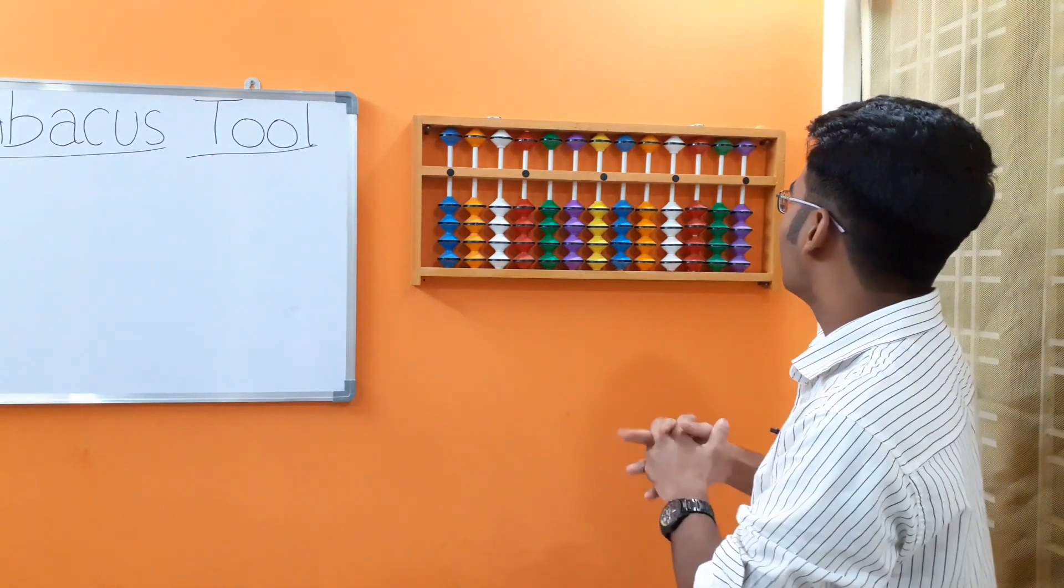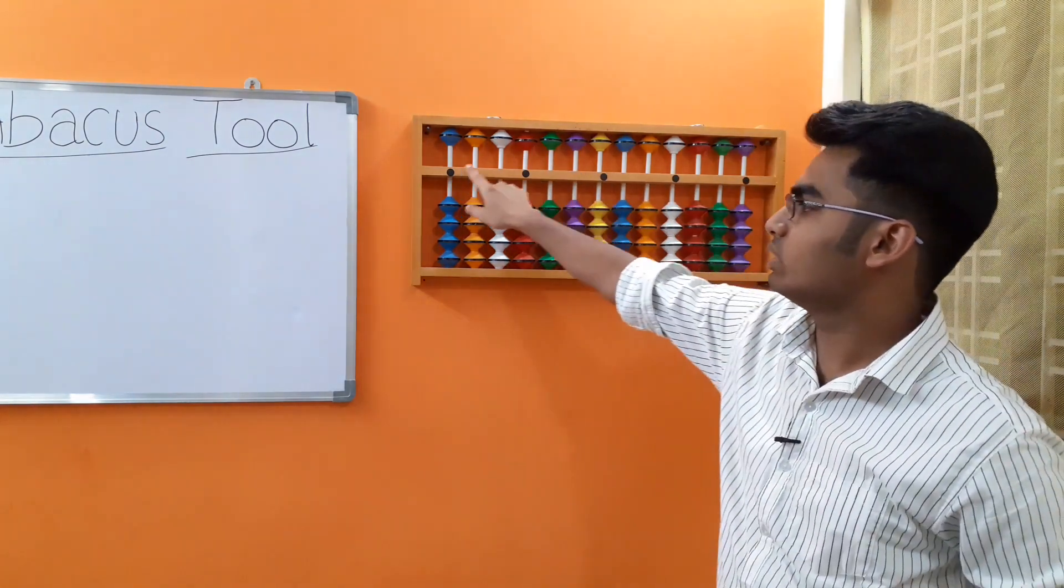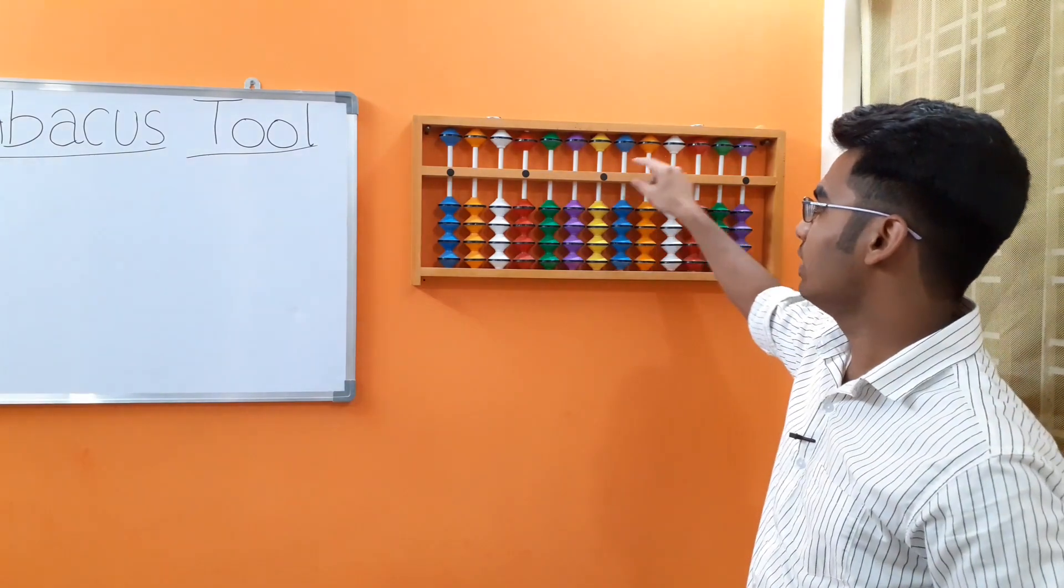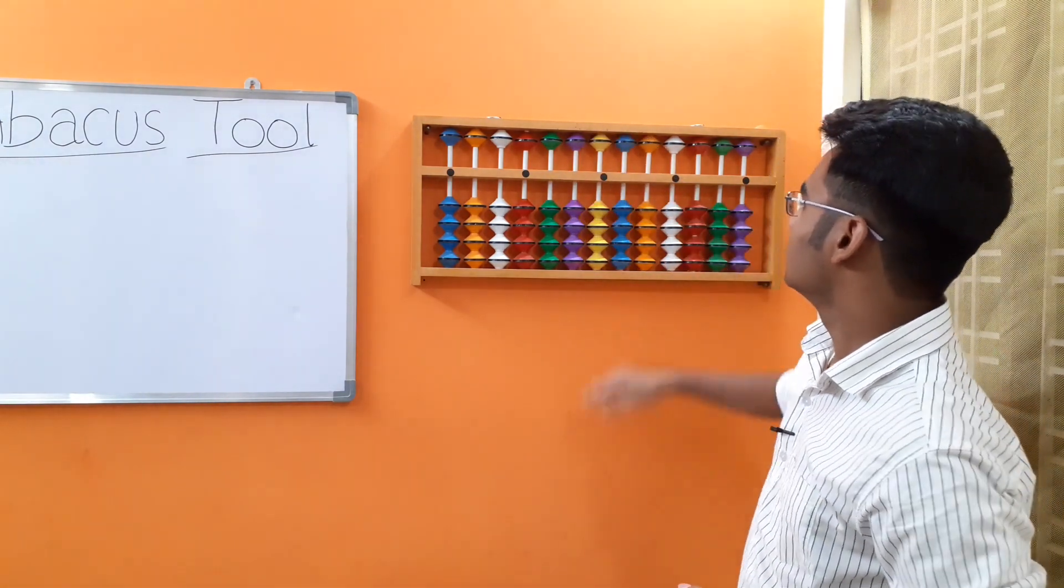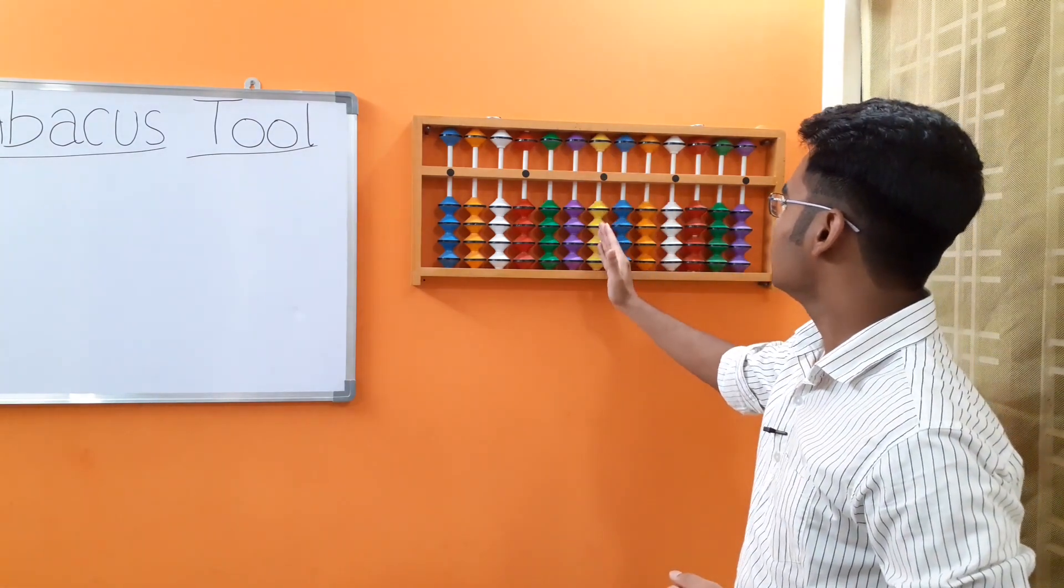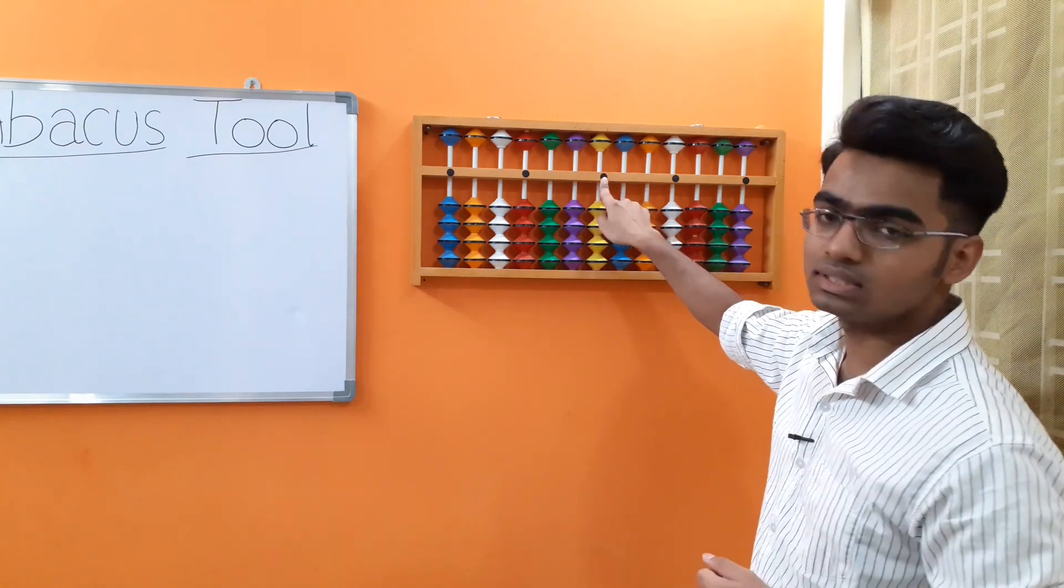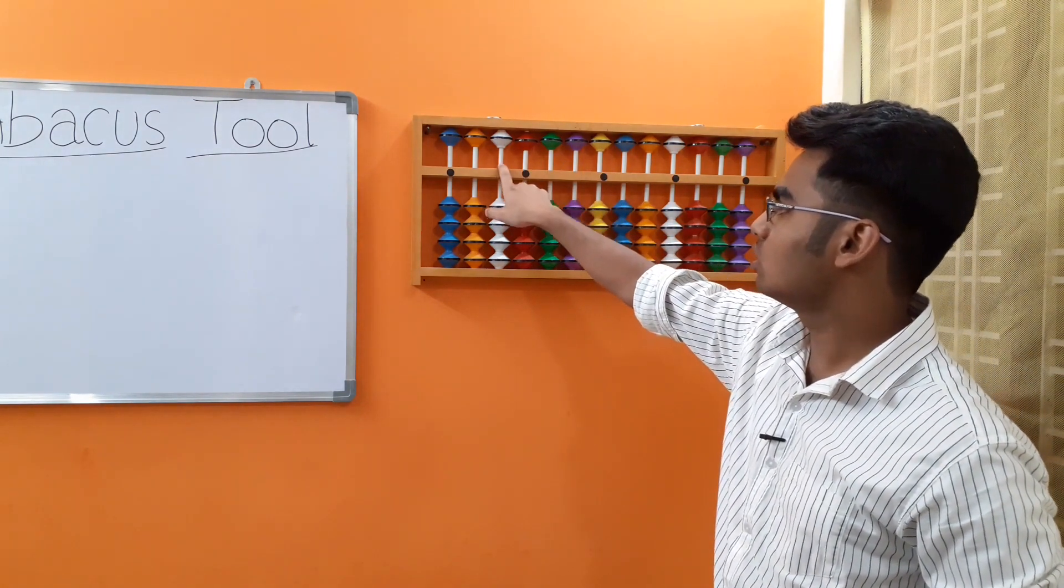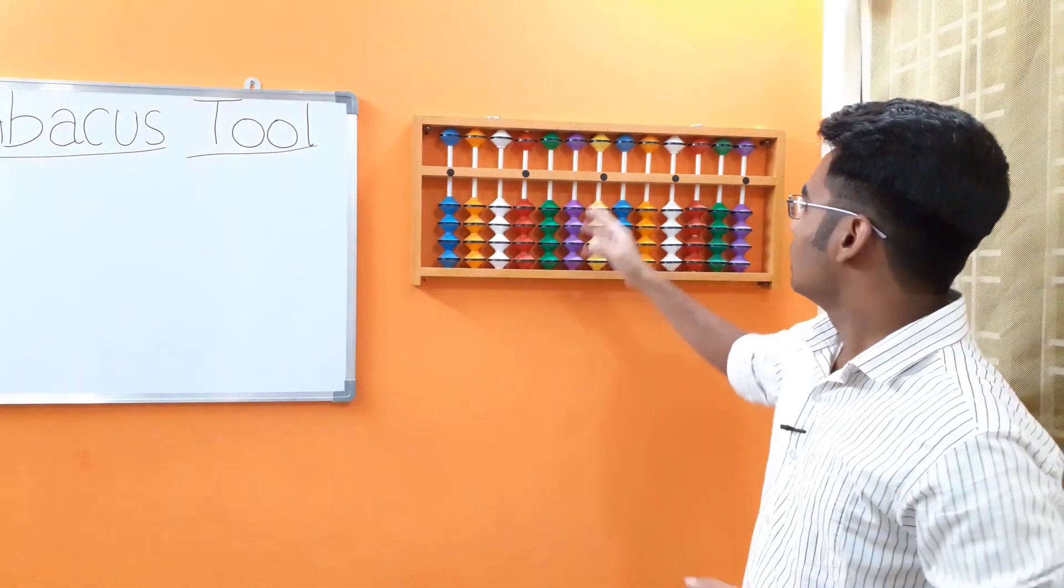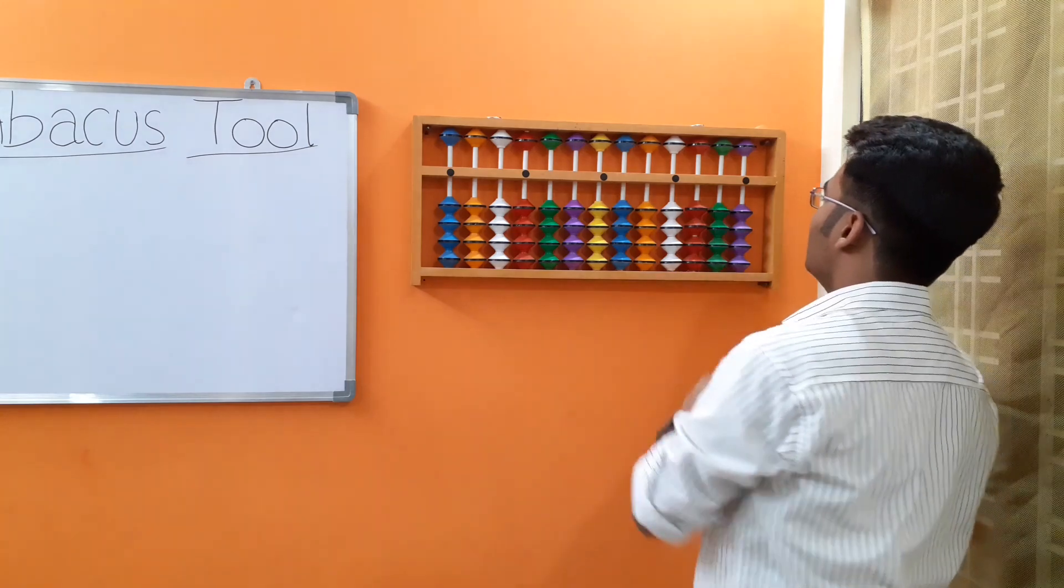This rod what you're seeing with the black dots is called the divider rod, which separates upper beads and lower beads. This is called the units rod with the black dot in the center, then tens rod, hundreds rod, thousands rod, ten thousands rod, and so on. To the right of the units rod we have the decimal numbers: 0.1, 0.01, 0.001, and so on and so forth.